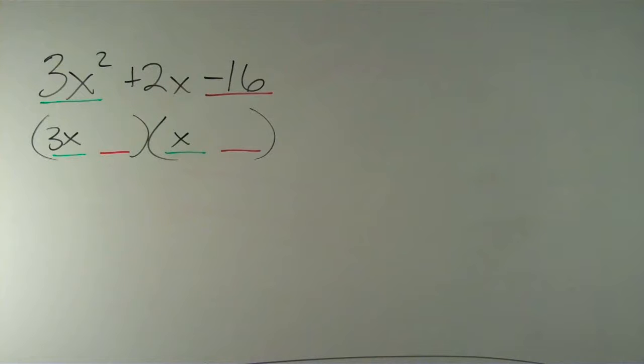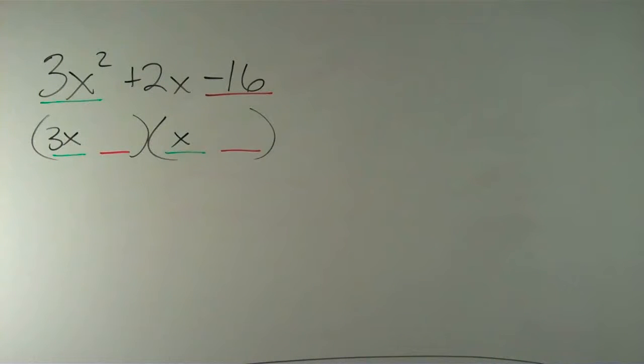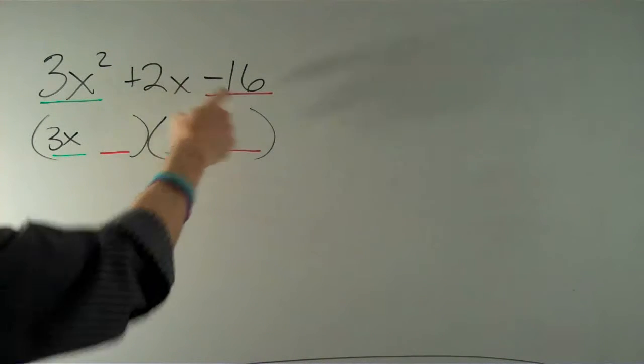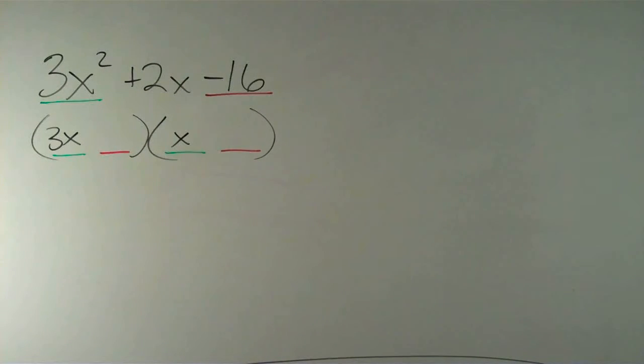I also know that the last term of my trinomial is the product of my last terms in my binomials. This is the one I want to pay particular attention to because we have a negative product. How does one get a negative product? There's really only one way, and that is positive number times negative number.